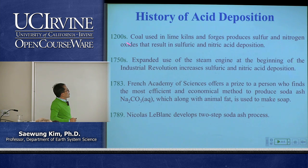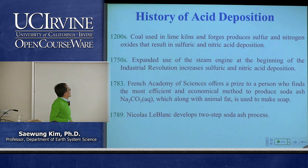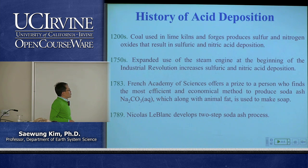Coal has been used since about 1200 for making lime for building material. Burning coal emits SO₂ and NO₂ to the atmosphere. SO₂ eventually becomes sulfuric acid. People began to realize that acid deposition from sulfuric acid and nitric acid was causing problems on the ground. The acid deposition problem became serious around the late 1700s when a chemist developed a method to make soda ash for soap manufacturing.